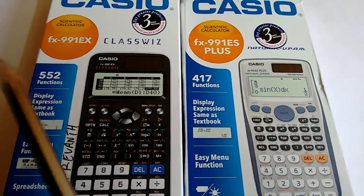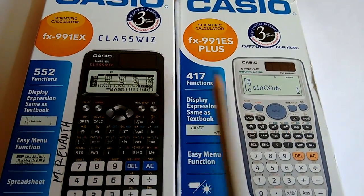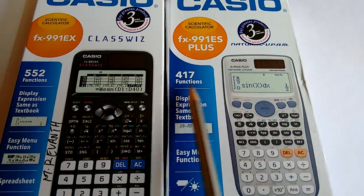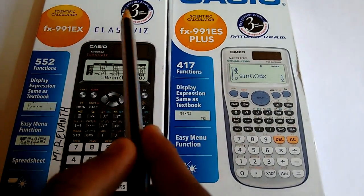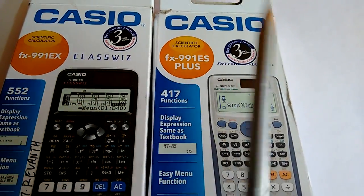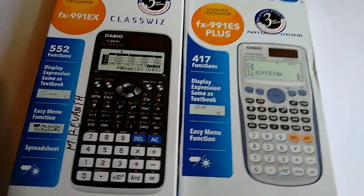The EX version has 552 functions and the ES Plus version has 417 functions. They both come with a 3 year warranty seal on the box and the price also differs a lot.